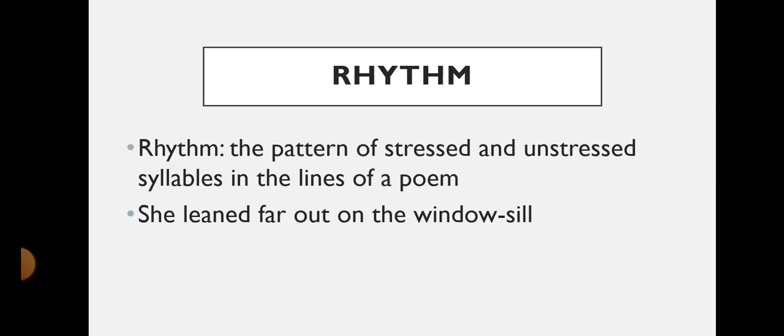Rhythm: the pattern of stressed and unstressed syllables in the lines of a poem. For example, she leaned far out on the window sill.